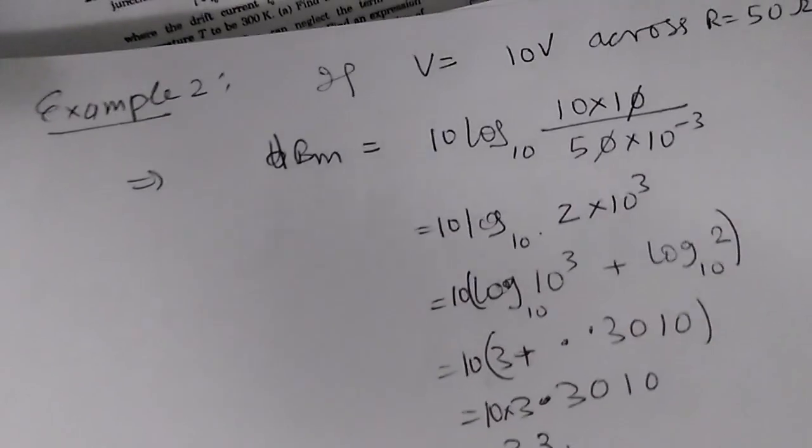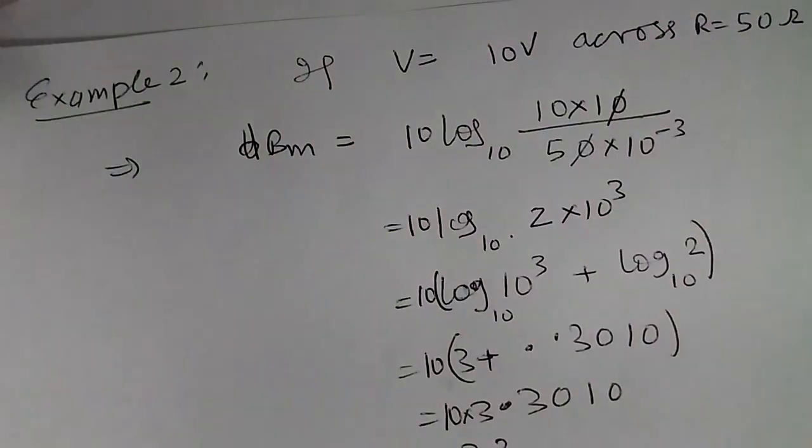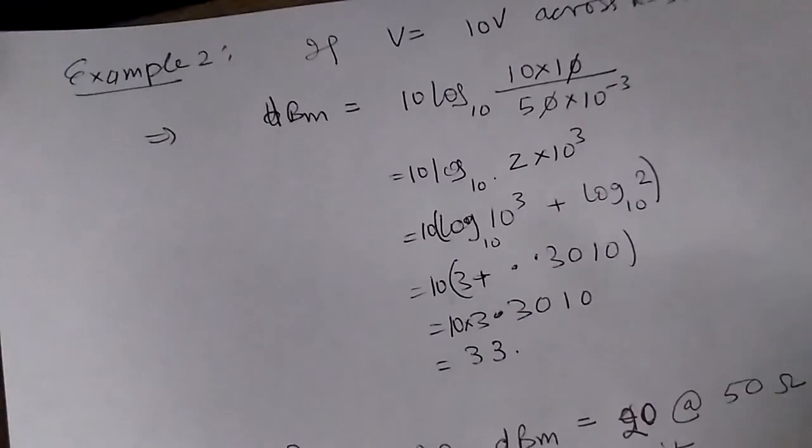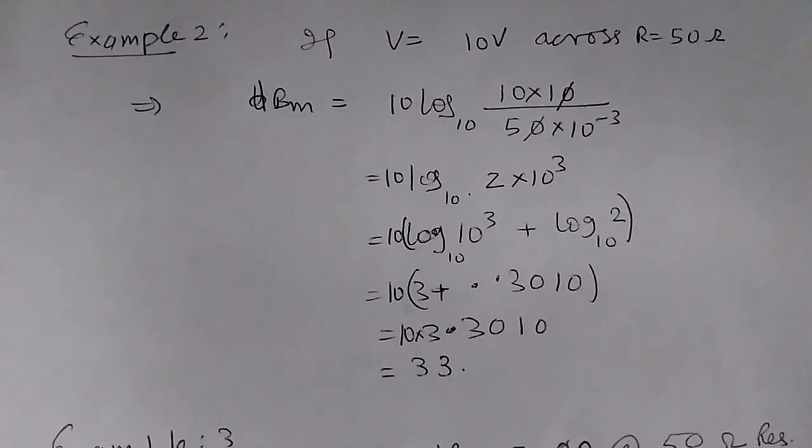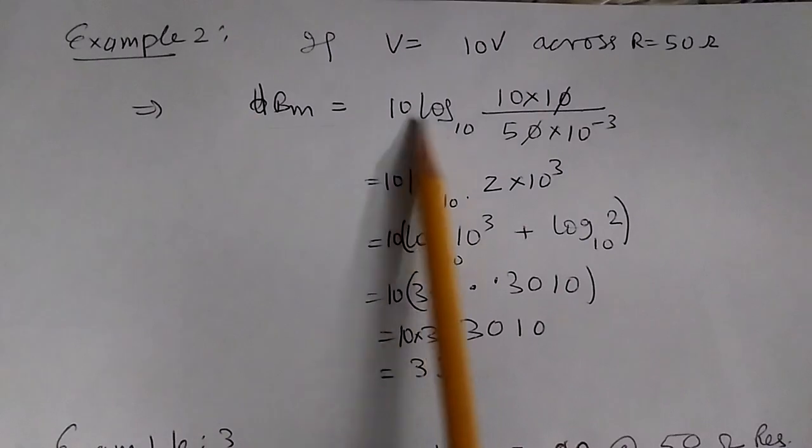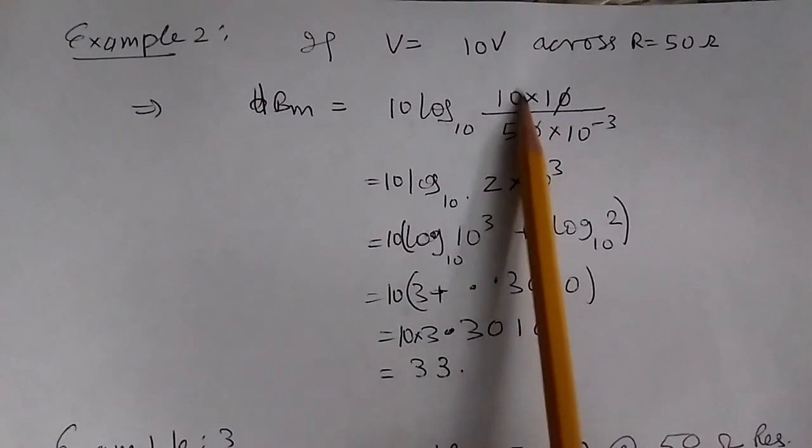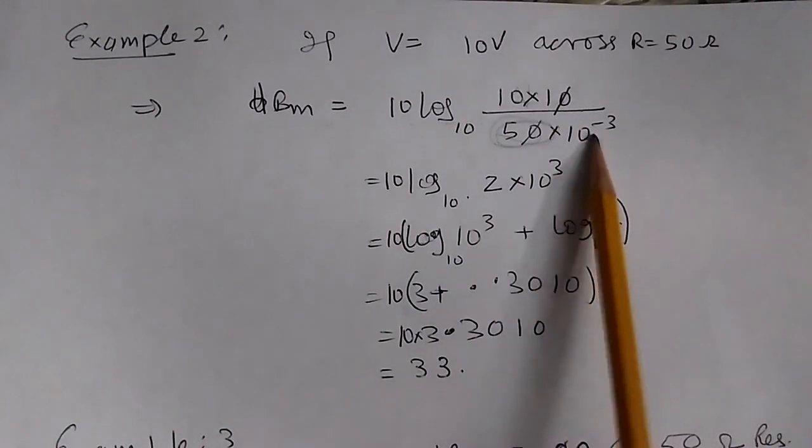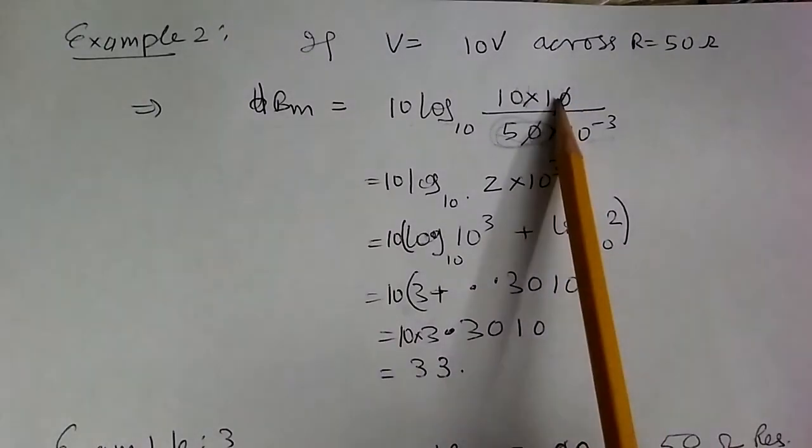Let's take another example. If we measure 10 volts across a 50 ohm resistor, what is the dBm? We get dBm = 10 log₁₀(10² / (50 × 10⁻³)). The zeros cancel.